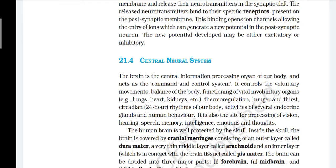The brain is the central information processing organ of our body and acts as the command and control system. It controls involuntary movement, balance of the body, functioning of vital involuntary organs such as lungs, heart, and kidney, thermoregulation, hunger and thirst, circadian rhythms, activities of several endocrine glands, and human behavior. It is also the site of processing of vision, hearing, speech, memory, intelligence, emotions, and thoughts. The human brain is well protected by the skull. Inside the skull, the brain is covered by cranial meninges consisting of an outer layer called dura mater, a very thin middle layer called arachnoid, and an inner layer in contact with the brain tissue called pia mater. The brain can be divided into three major parts: forebrain, midbrain, and hindbrain.